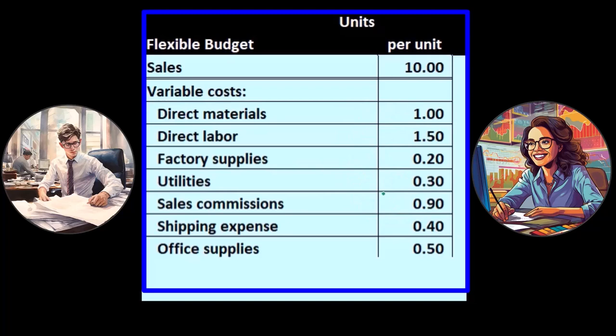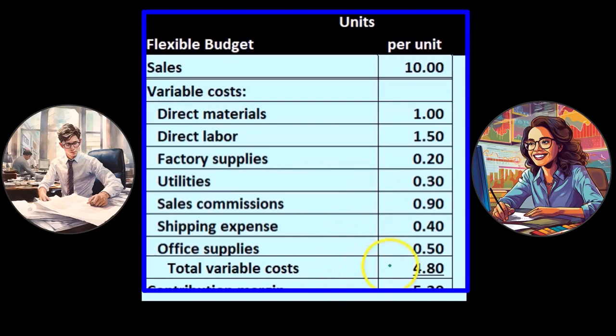That's going to be the point—that's what's going to make it flexible, what makes the budget able to flex. That'll give us the total variable costs, which is 4.8 if we add up all the variable costs here, variable costs per unit.